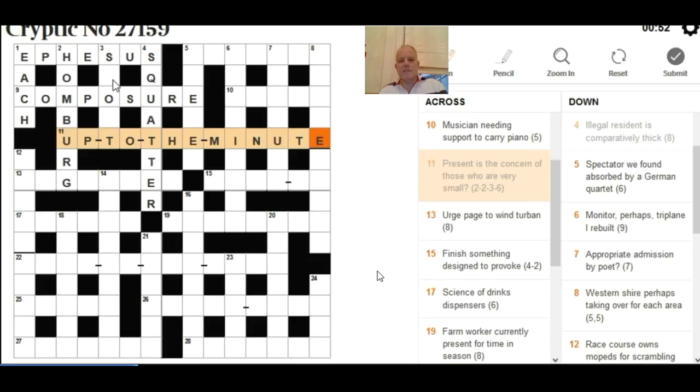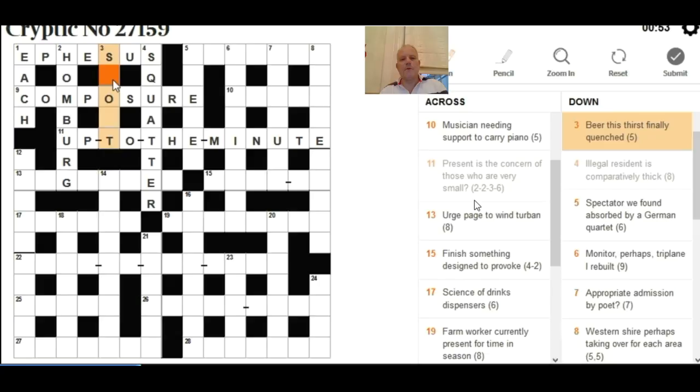Back to three down after that: 'Beer this thirst finally quenched.' Even though I'd thought of SHORT I know it's not a beer, so STOUT did come to mind. That can be made up of THIS and THIRST's last letters - if you take 'this thirst finally' you're just getting ST, and 'quenched' like a fire being quenched makes STOUT.